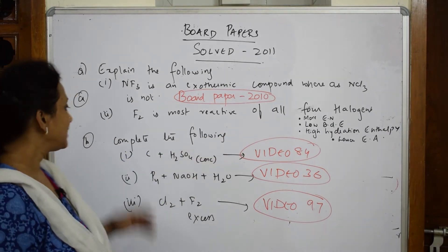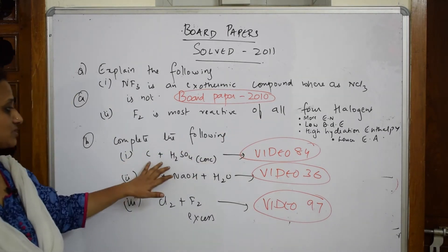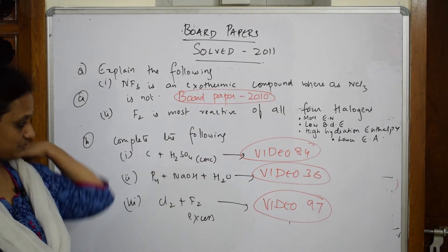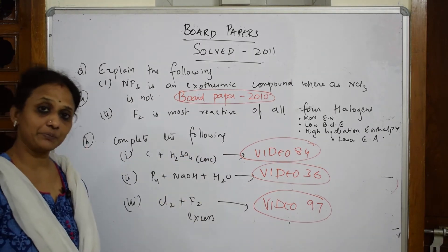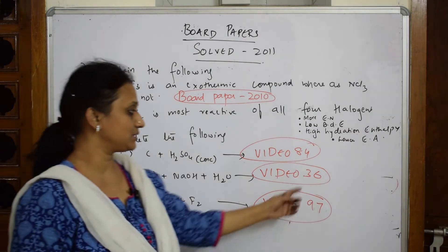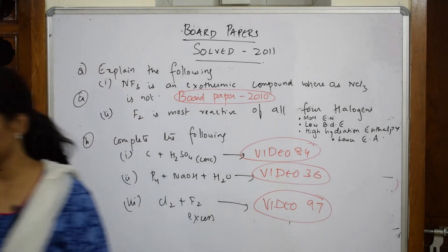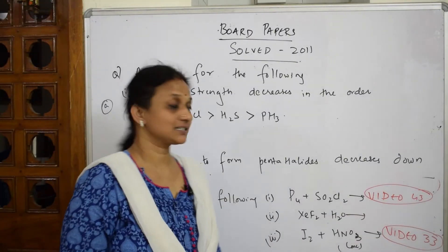After this, complete the following reactions I did in video number 84, phosphorus preparation of phosphine in the lab preparation which is done in video number 36, and chlorine interhalogen compound in video number 97. Let's come back and finish off your 2011 paper with this question.